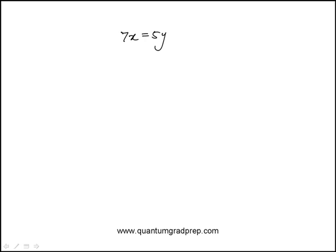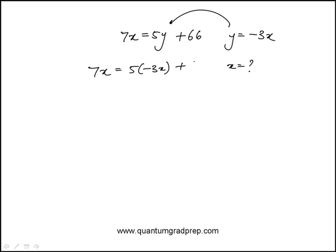We're told that 7x is 5y plus 66, and the other relationship is y is minus 3x. We need to find what x is. So we can replace y in terms of x here. That becomes 5 times minus 3x plus 66, which is minus 15x.